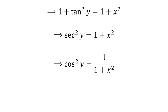The reciprocal of secant squared of y is cosine squared of y. So, taking the reciprocal of both sides, we get cosine squared of y is equal to 1 divided by 1 plus x squared.